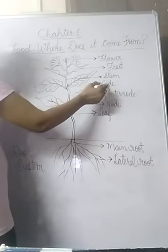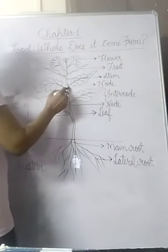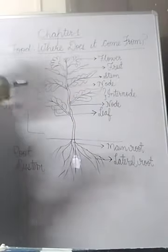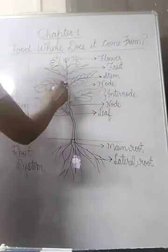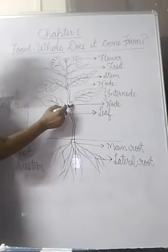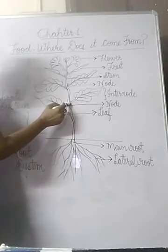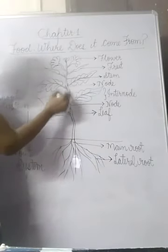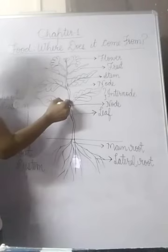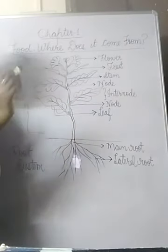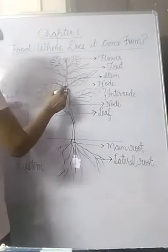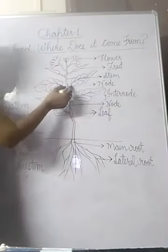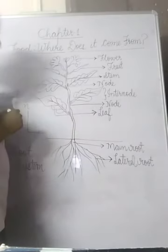Here I have written 'node.' The part of the plant from where a leaf or branch arises is called a node. Here is one leaf — this part from where the leaf arises is called a node. And this is another leaf, and the gap between these two nodes is called internode. So node is that part of the plant from where a leaf or branch arises, and the gap between two nodes is called internode.